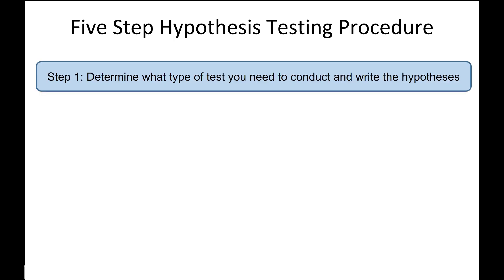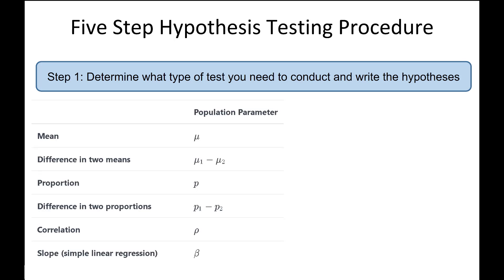Step 1 is to determine what type of test you need to conduct and write the hypotheses. You should start by determining which parameter you're testing, then use that parameter to write your hypotheses. In addition to knowing the parameter, you also need to know the direction — left-tailed, right-tailed, or two-tailed. For a single sample mean or single sample proportion, you'll need to know the hypothesized parameter — the number that goes in the hypotheses. Here are some examples of what your hypotheses could look like.